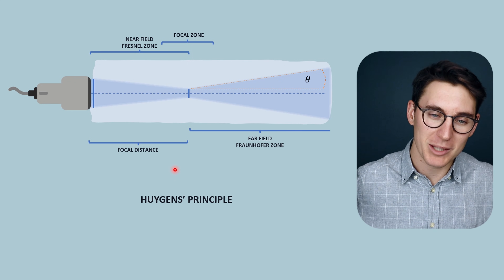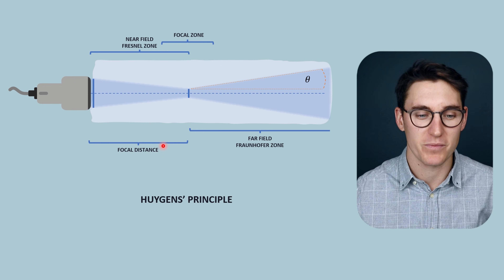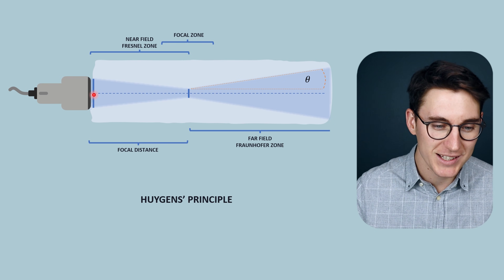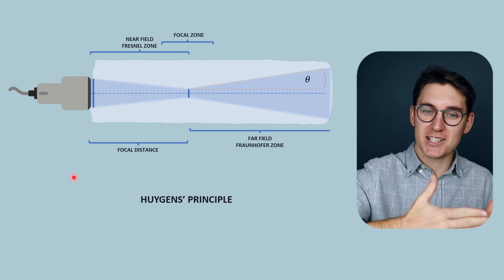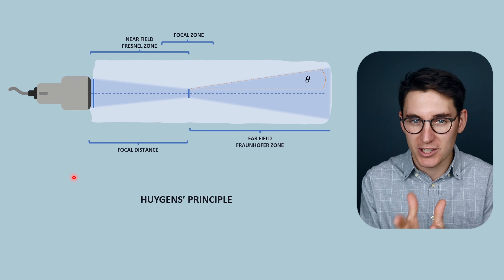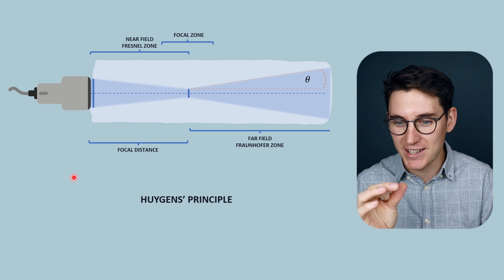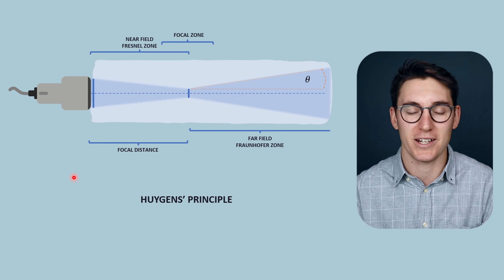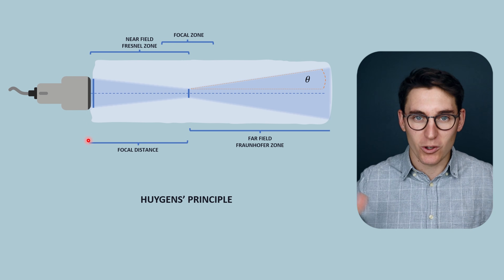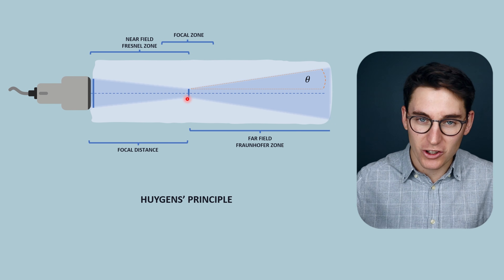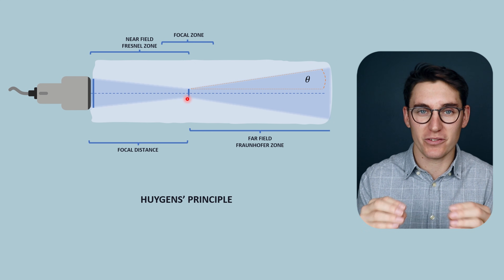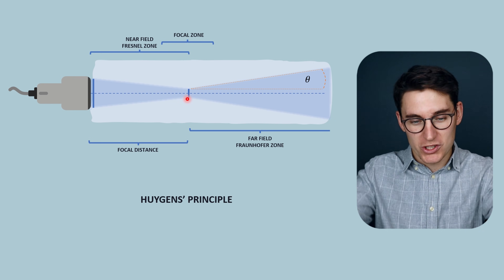Why does the ultrasound beam converge to a focal point before diverging? Whenever we create a wave, we can use Huygens principle, which states that a wave can be separated into an infinite amount of small discrete wavelets, each acting independently as small sources of wave energy. The outermost parts of the ultrasound beam constructively interfere with the innermost wavelets, continuing until we reach the focal point at the end of our near-field zone, after which the beam diverges into the far field.